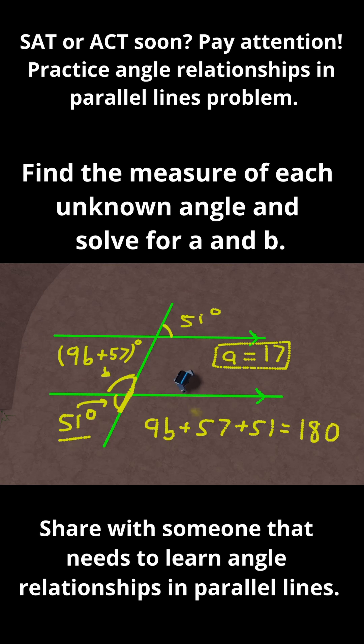So all you need to do is subtract 51 and subtract 57 from both sides. So 180 minus 51 and minus 57. And if you do all that math, what you're going to find is that 9b equals 72, and then divide by 9. And 72 divided by 9 is 8. Therefore, b is equal to 8. Let me rewrite that up here. So b equals 8 and we've solved for both a and b.